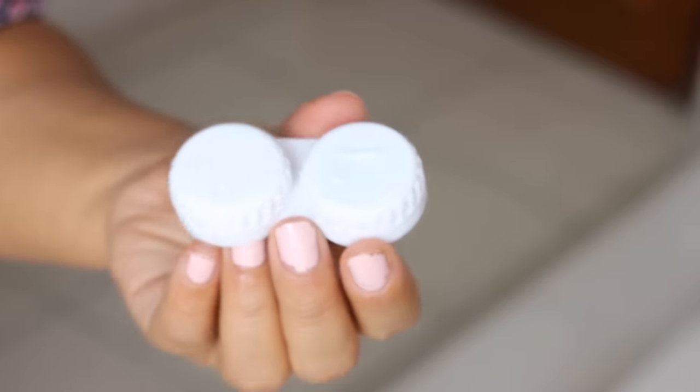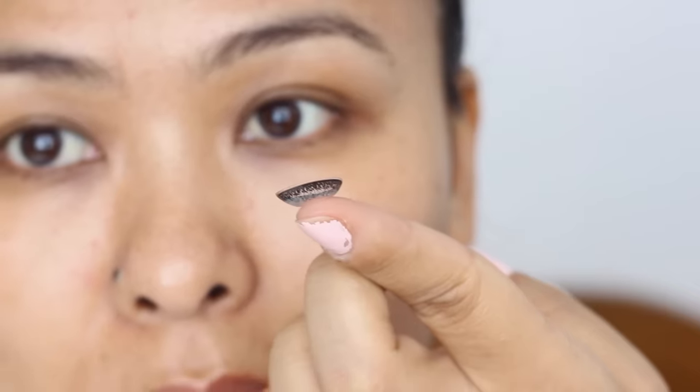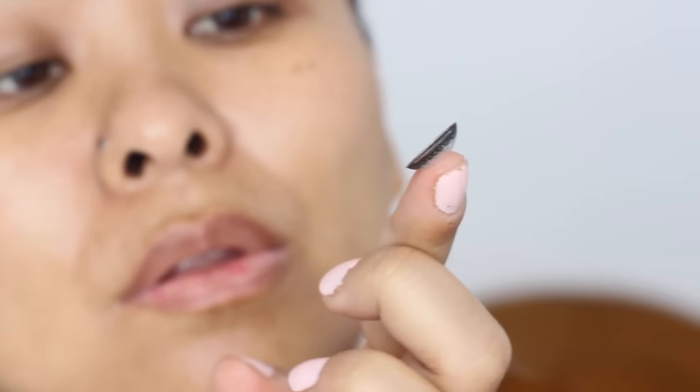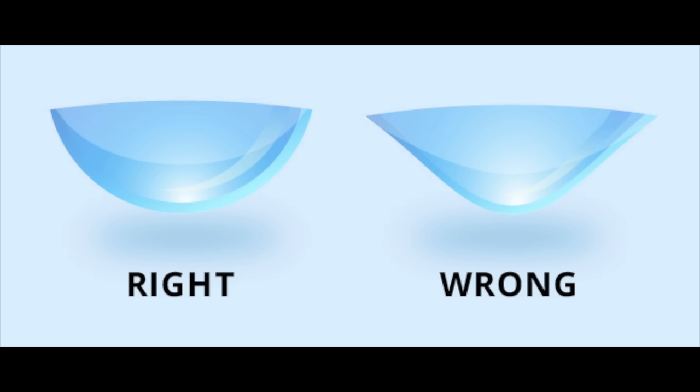Now to put on the lenses, just take the lens from your lens case and place it on the tip of your index finger like so. Now it's very important to see that the lens is in a perfect bowl shape. If it's not in a bowl shape, that means you have to turn the lens around. Always make sure that when you're applying your lenses it should be in that perfect curve or bowl shape.